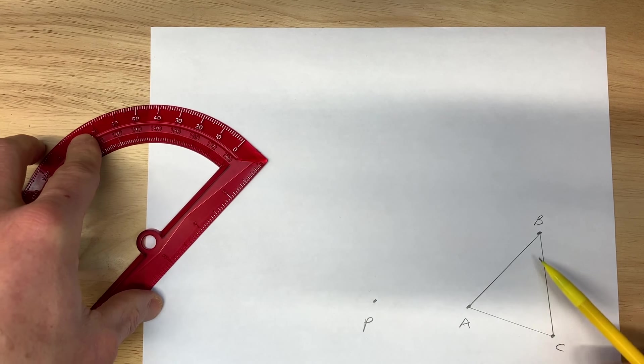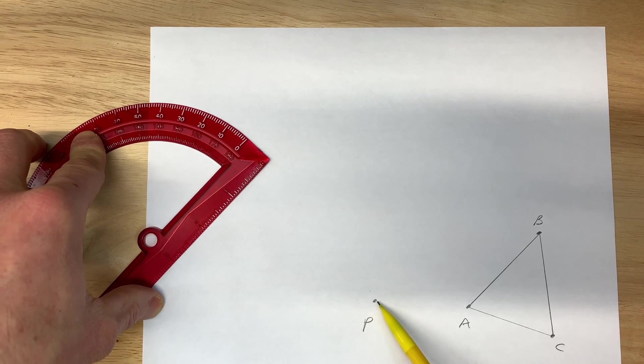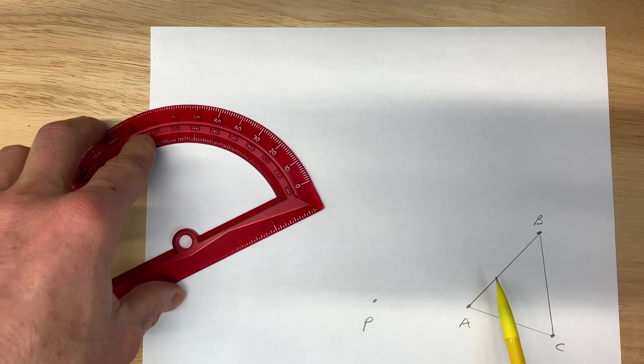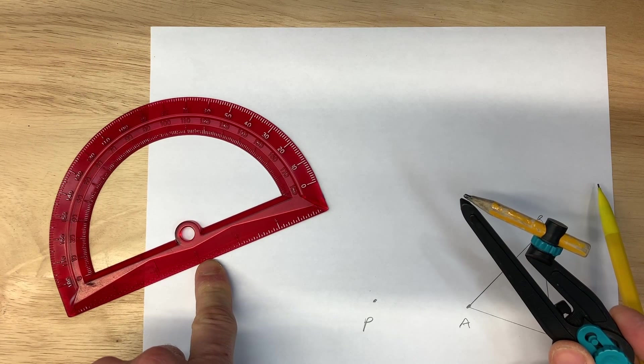In this particular example we're going to rotate this triangle ABC 120 degrees about this point P using a protractor and a compass.